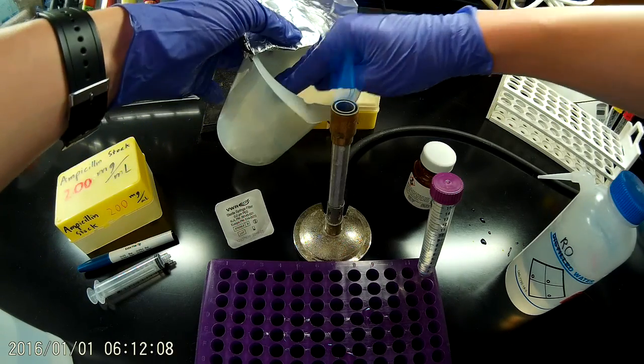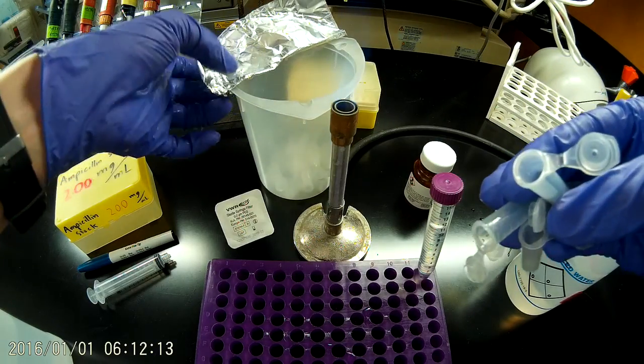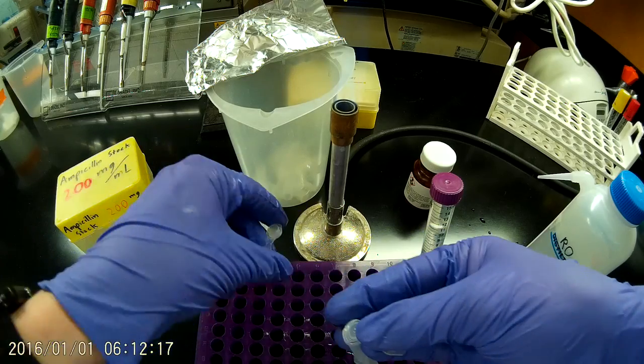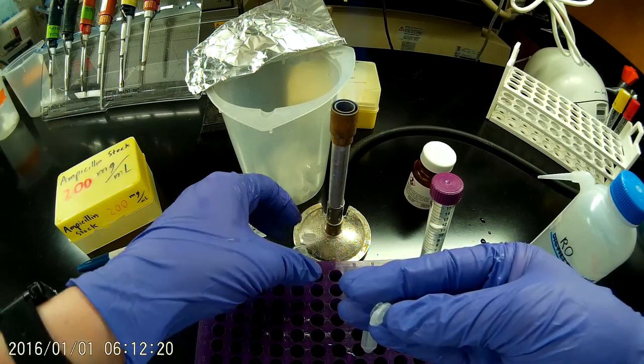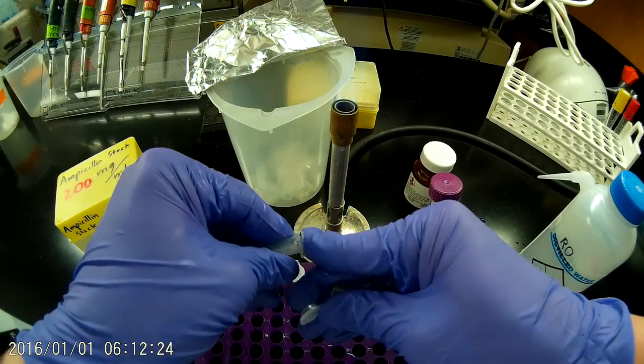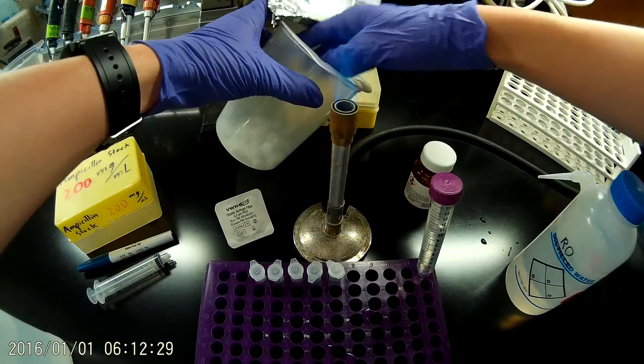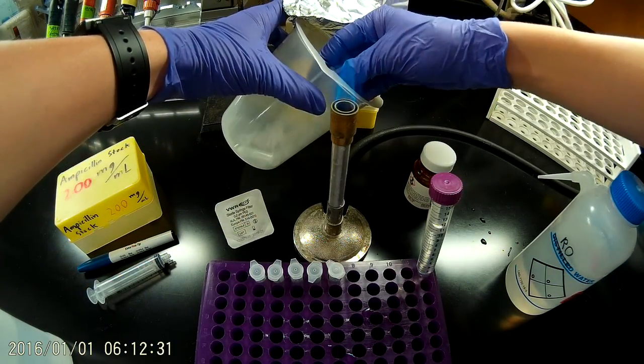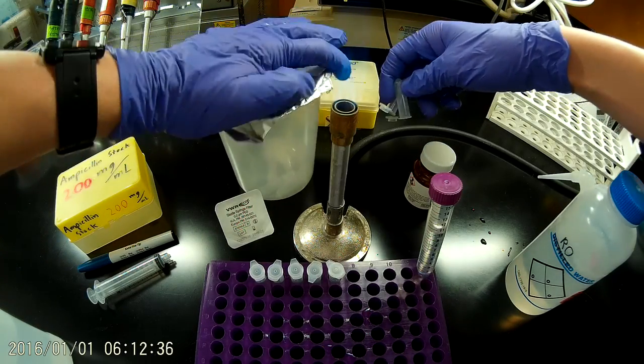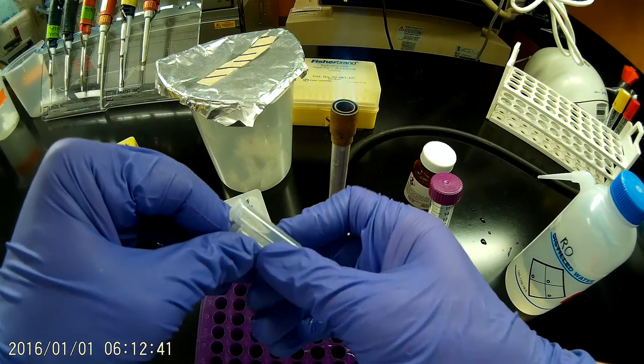I'm going to pull out some 2 mil tubes, these sterile 2 mil tubes. Keep that nice and close to the flame. That's 1, 2, 3, 4, 5. All right, I guess I need 2 more. And as soon as I've gotten those, I want to put the tin foil back on there so we don't get dust or any other sort of contaminants in our tubes.